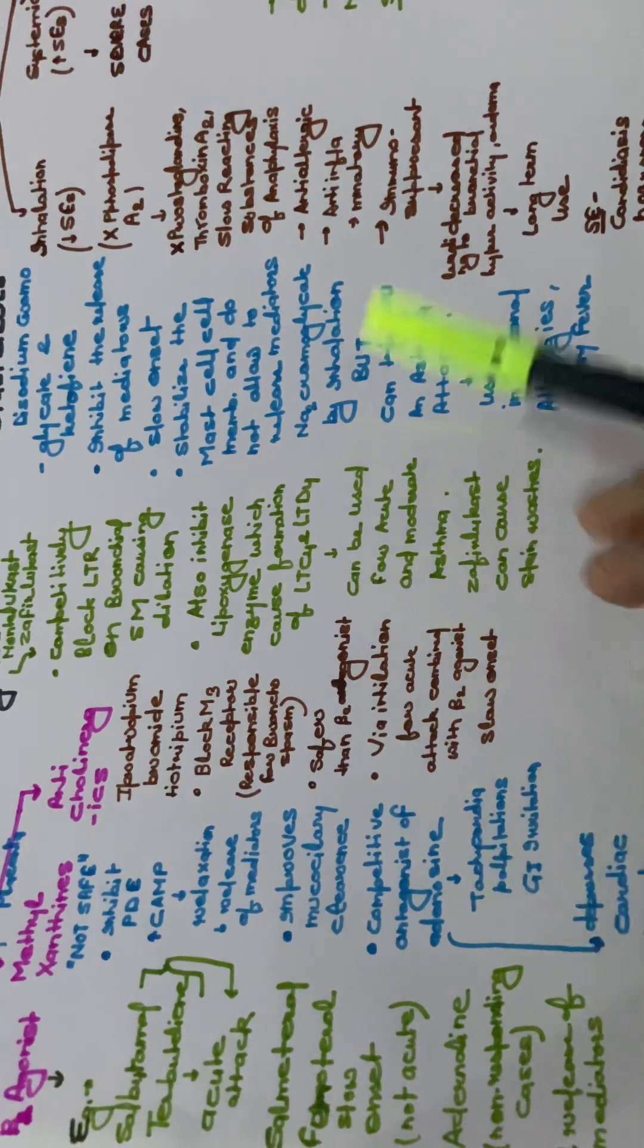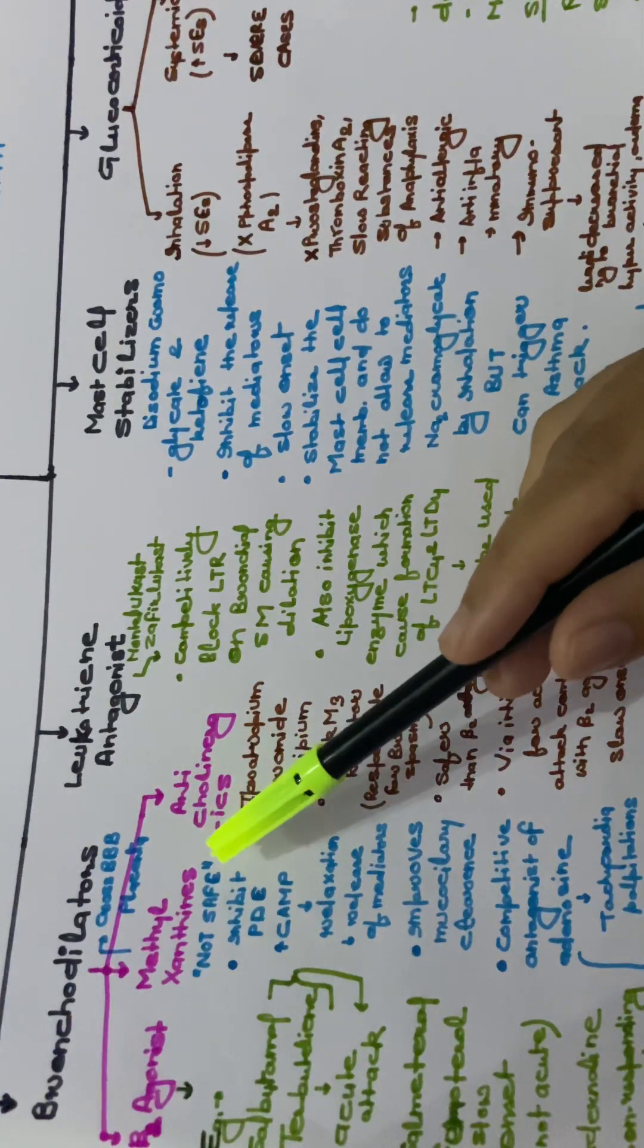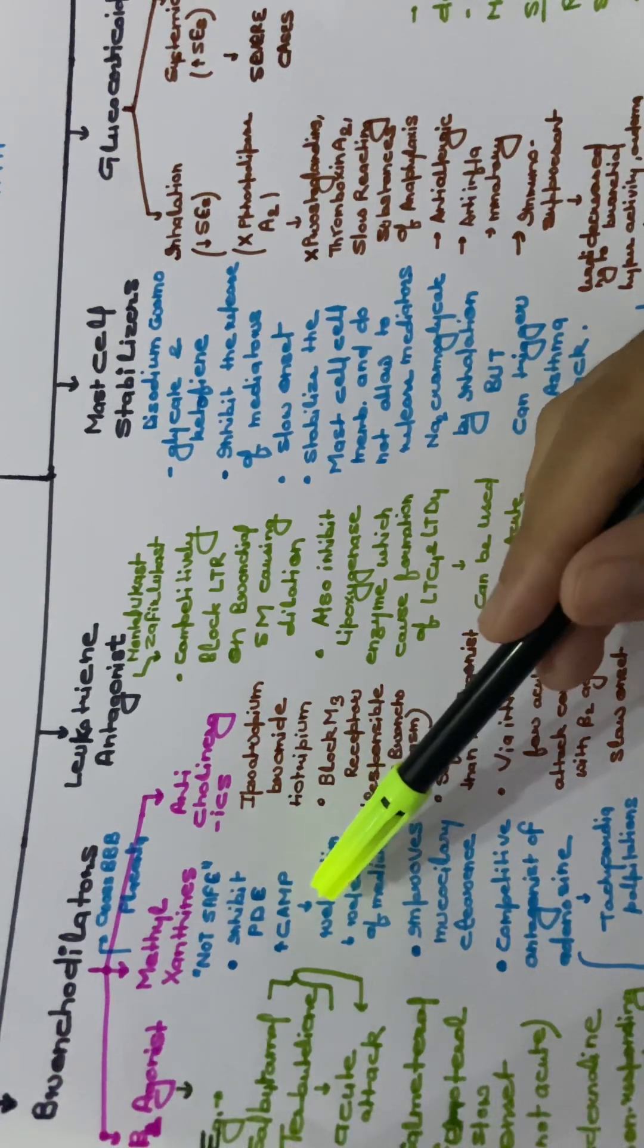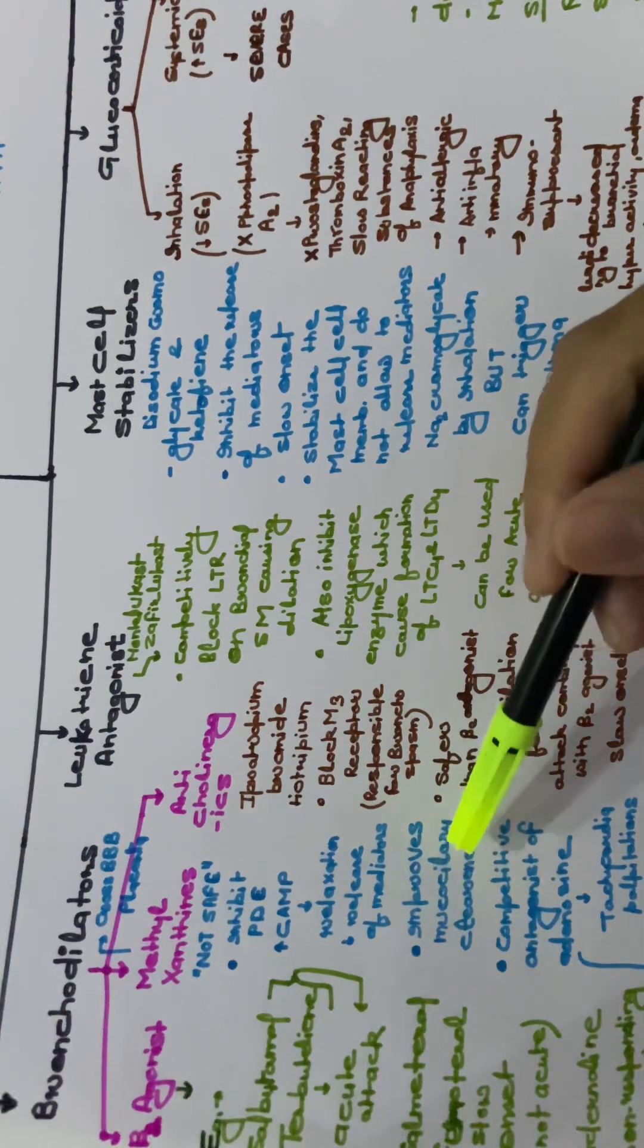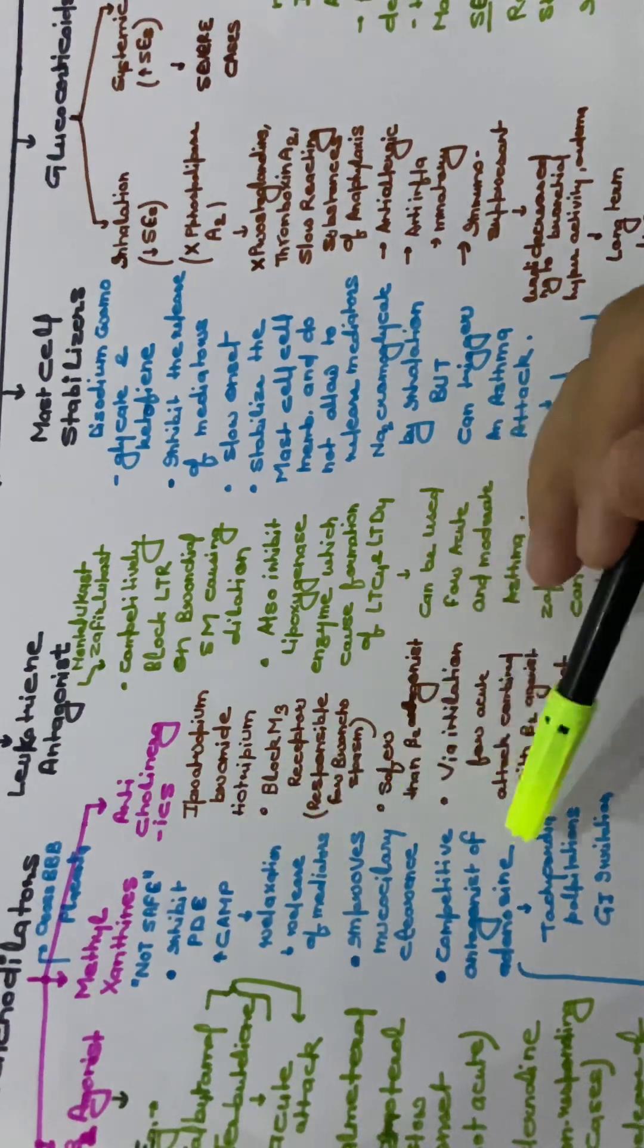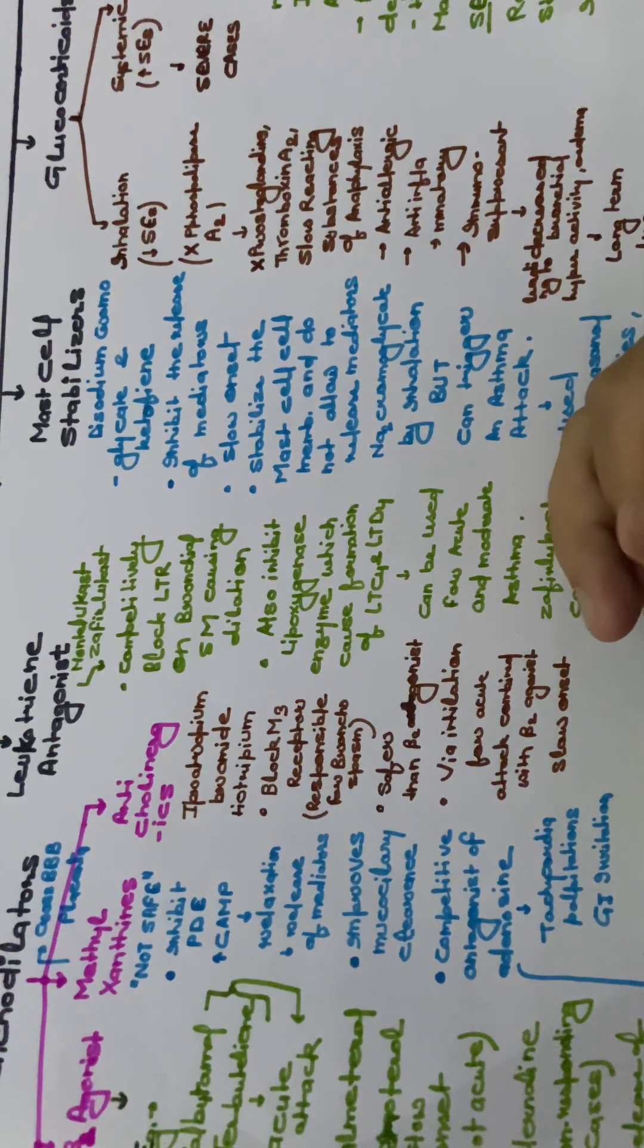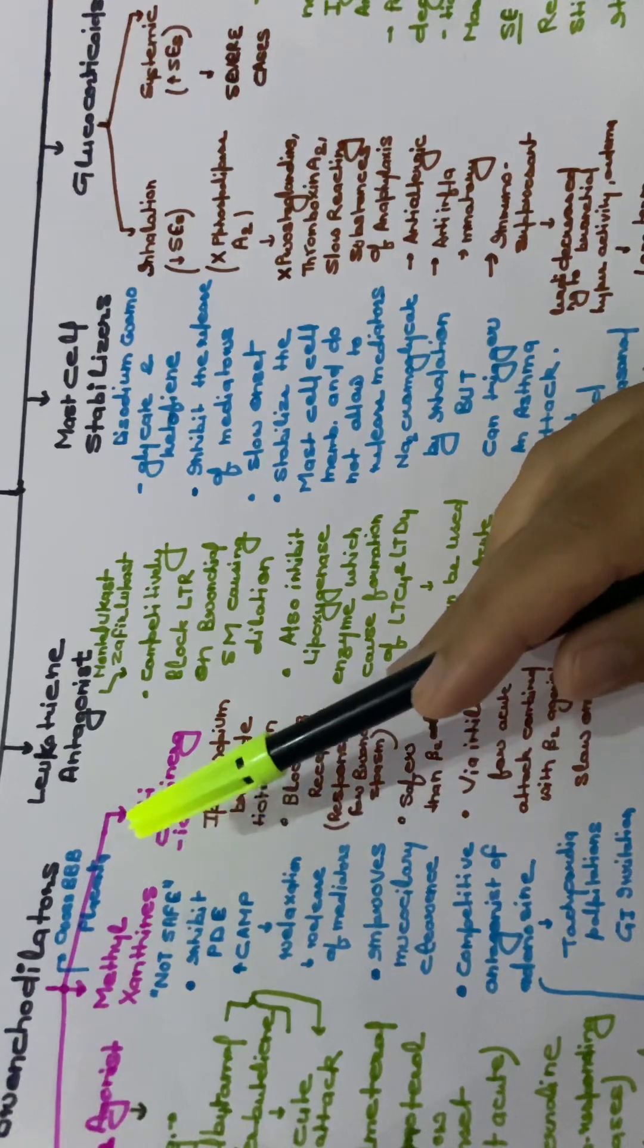Next is methylxanthines. It is not considered to be safe. It inhibits phosphodiesterase and increases the cyclic AMP which decreases the relaxation of mediators, improves mucociliary clearance, competitive antagonist of adenosine. It cannot be considered safe because it causes tachycardia, palpitations, and GI irritations. It depresses the cardiac muscles which in turn causes tachycardia. It also crosses the blood-brain barrier and placenta.